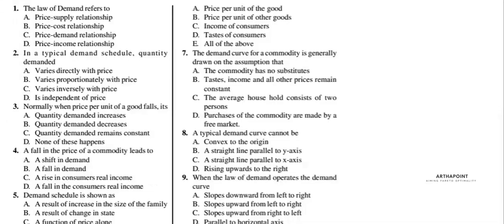First question: the law of demand refers to simply a relationship between price and quantity demanded, so the answer is C. In a typical demand schedule, the law of demand shows a negative relationship between price and quantity demanded, so the answer is C. Normally when price per unit of a good falls, quantity demanded increases because we are talking about normal goods, so the answer is A.